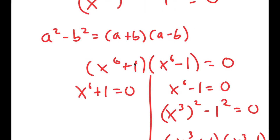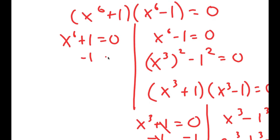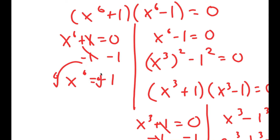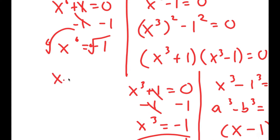Now for x to the power of 6 plus 1 equals 0, I'm going to subtract 1 on both sides. So x to the power of 6 equals negative 1, and if I take the 6th root I get x equals the 6th root of negative 1, which is equal to negative 1 to the power of 1 over 6.